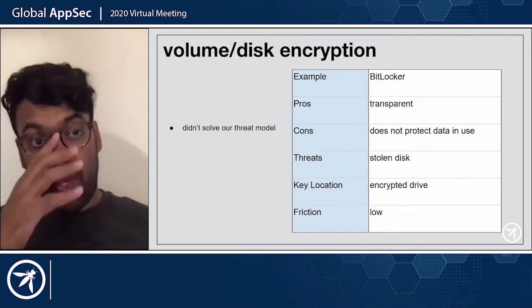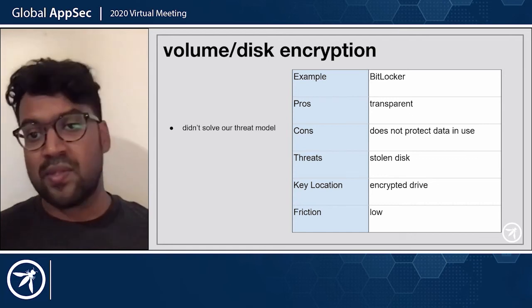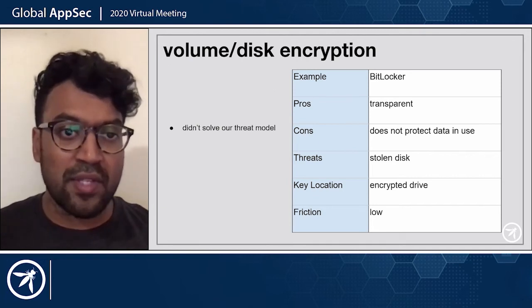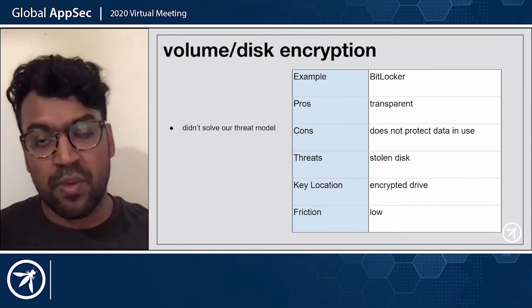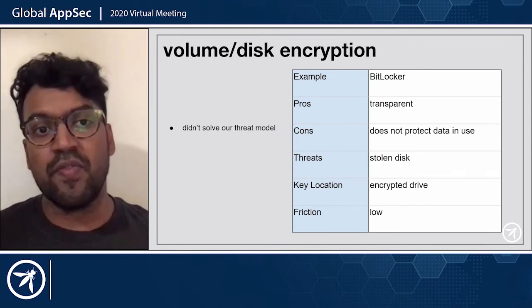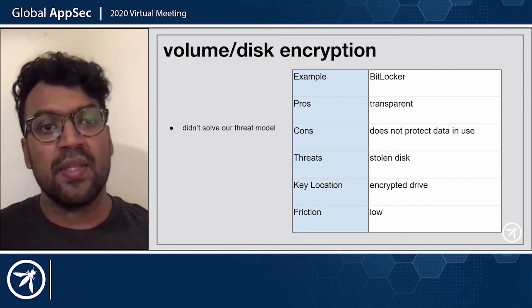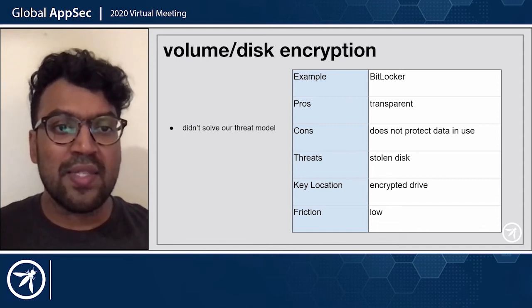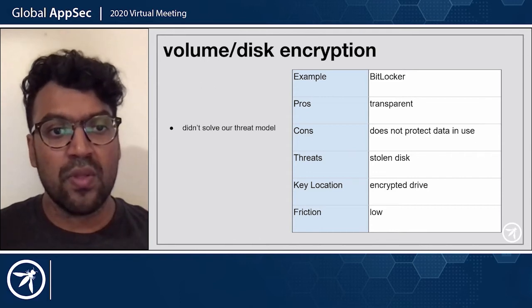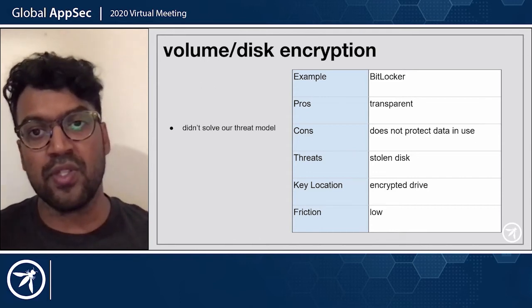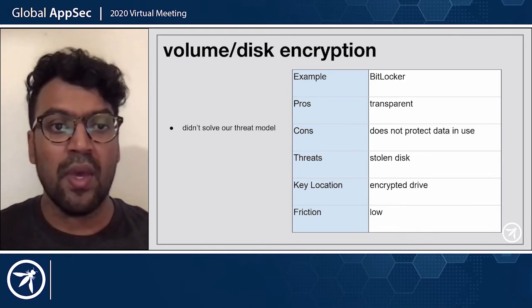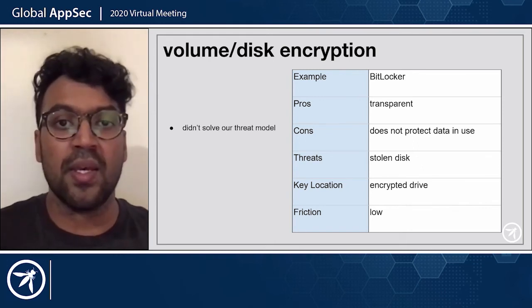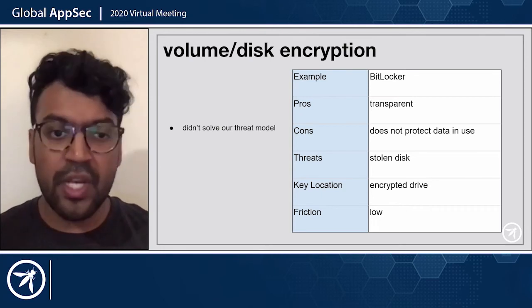First up, we have volume and disk encryption — an example is the encryption on your file system on your laptop or server, or BitLocker. As long as your system can boot and you can mount that volume, you should be fine. Some good things about this: it's transparent and doesn't cause issues for the user. But at the same time, this doesn't really solve our threat model. This solves the threat of someone stealing the physical hard drive, not someone getting access to the data store or seeing data as it moves throughout the network. So we didn't use this option.